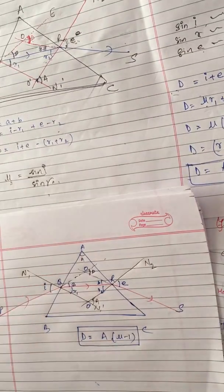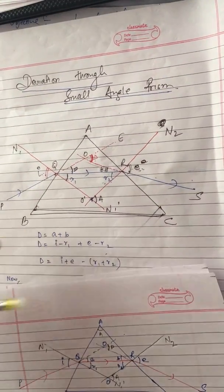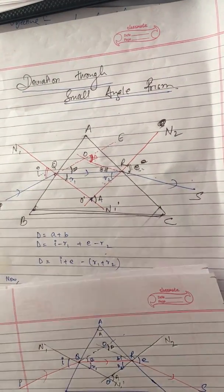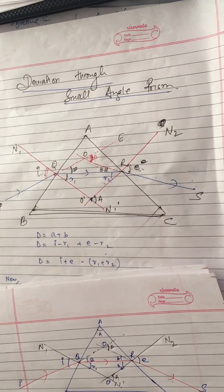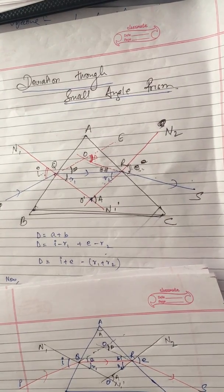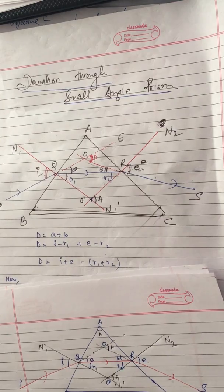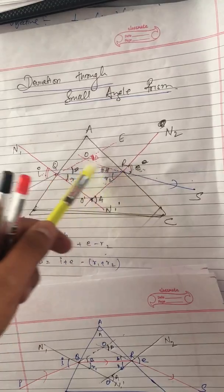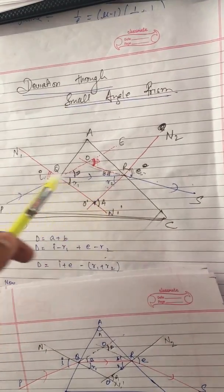So D is equal to i plus e minus (r1 plus r2), because the external angle is equal to the sum of opposite interior angles. So i minus r1 plus e minus r2 equals D. If we take the minus as common, then we get r1 plus r2.